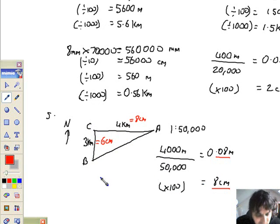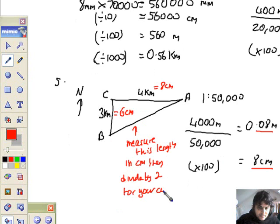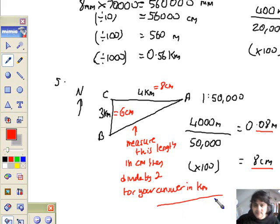Then, you just join the ends. Alright, measure the distance from A to B. Well, I can't do that. So, if I just give you a little sign to measure this length, then you can do it in class. And, whatever it is, you divide by 2 and put the answer into kilometres. What is the actual distance from A to B? Basically, measure the length in centimetres. Then, divide by 2 for your answer in kilometres.